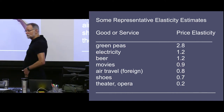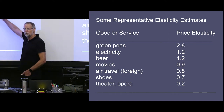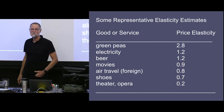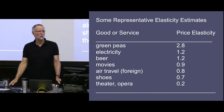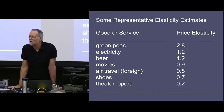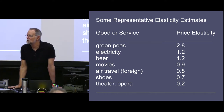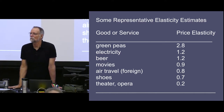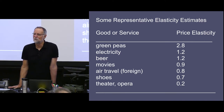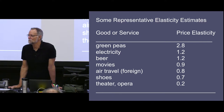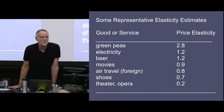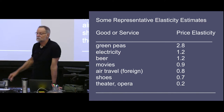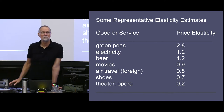Why is the elasticity for green peas so high — a 1% price increase and 3% of consumers leave the product? And why do theater ticket buyers barely budge when prices rise? What's going on?